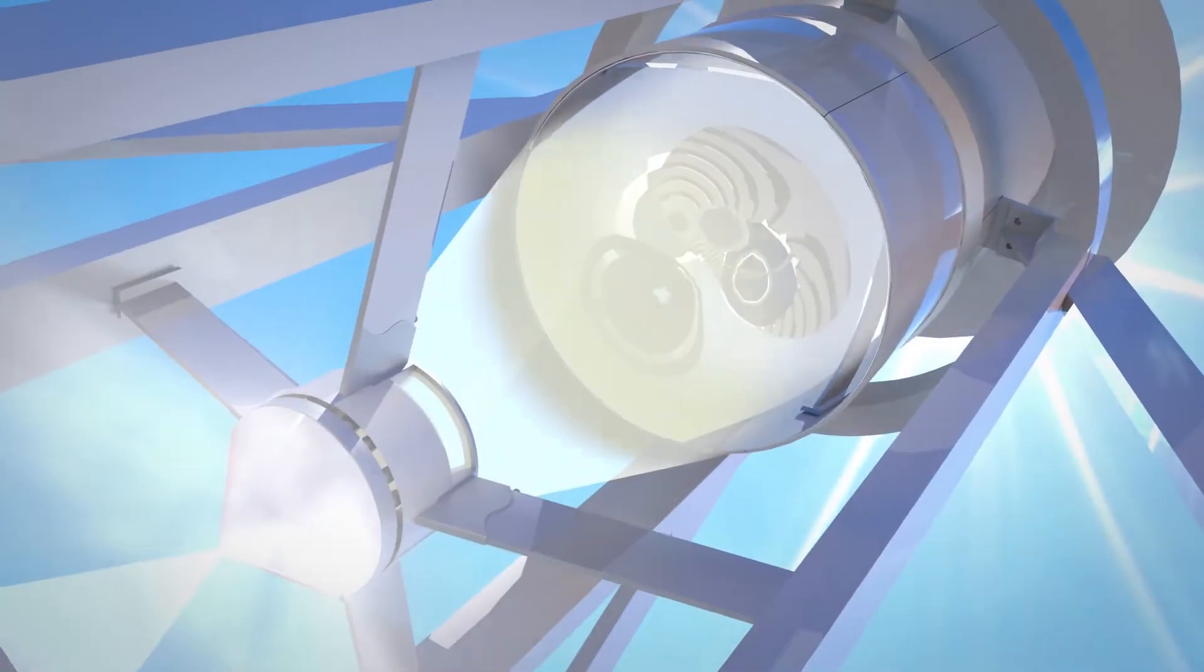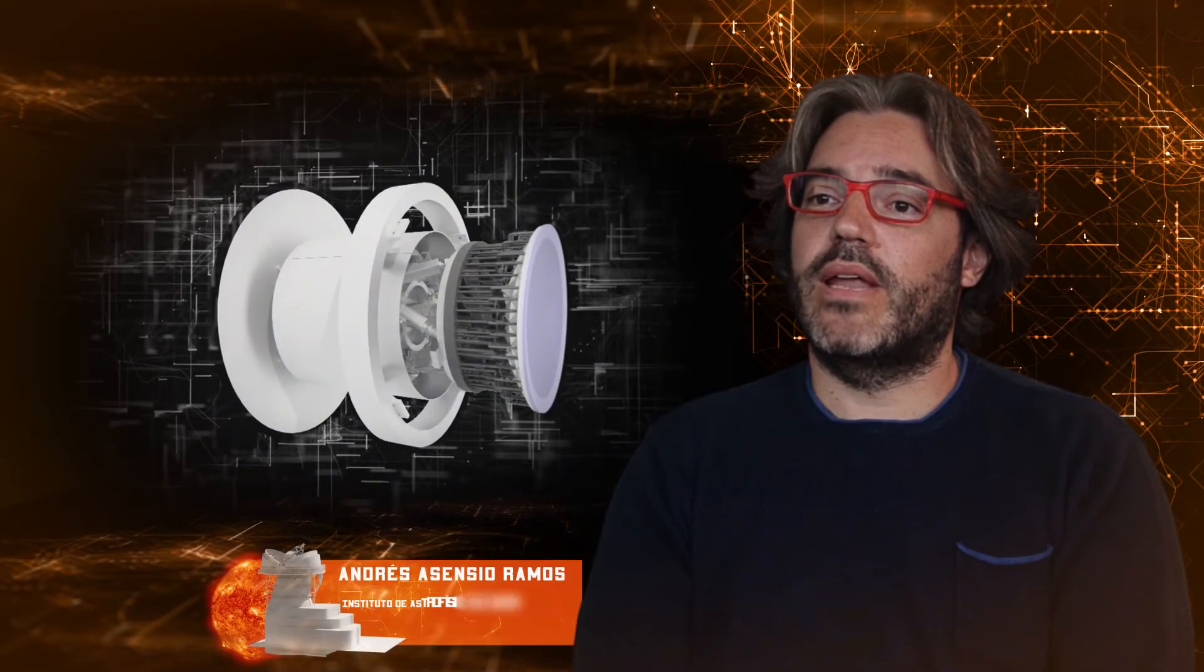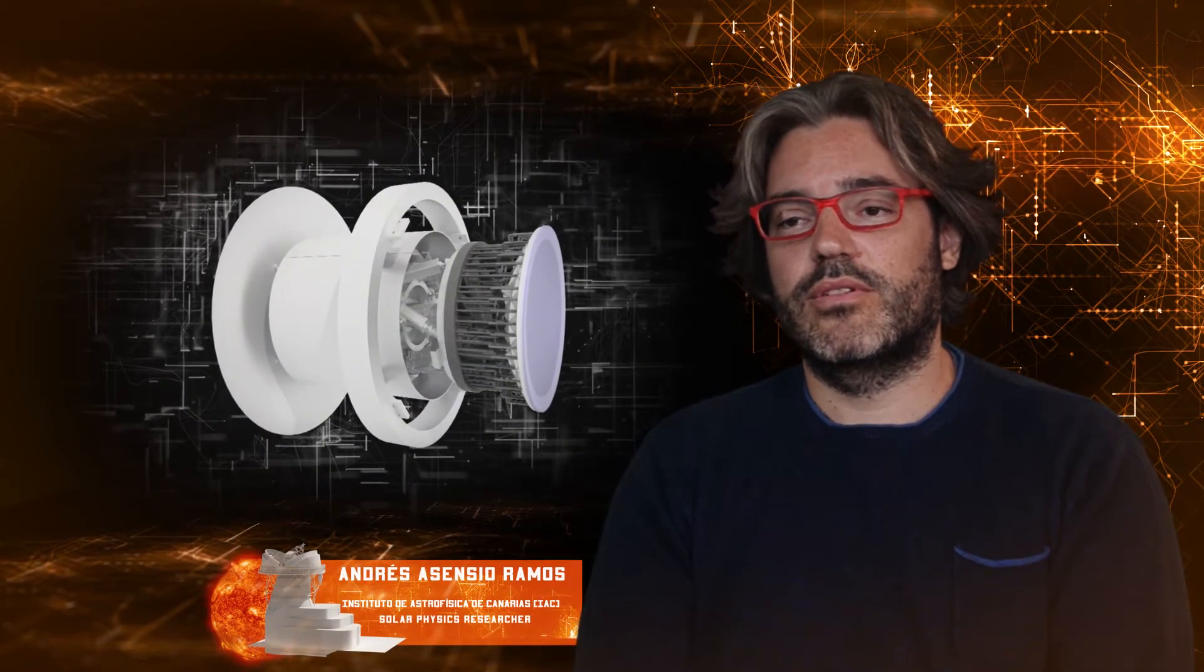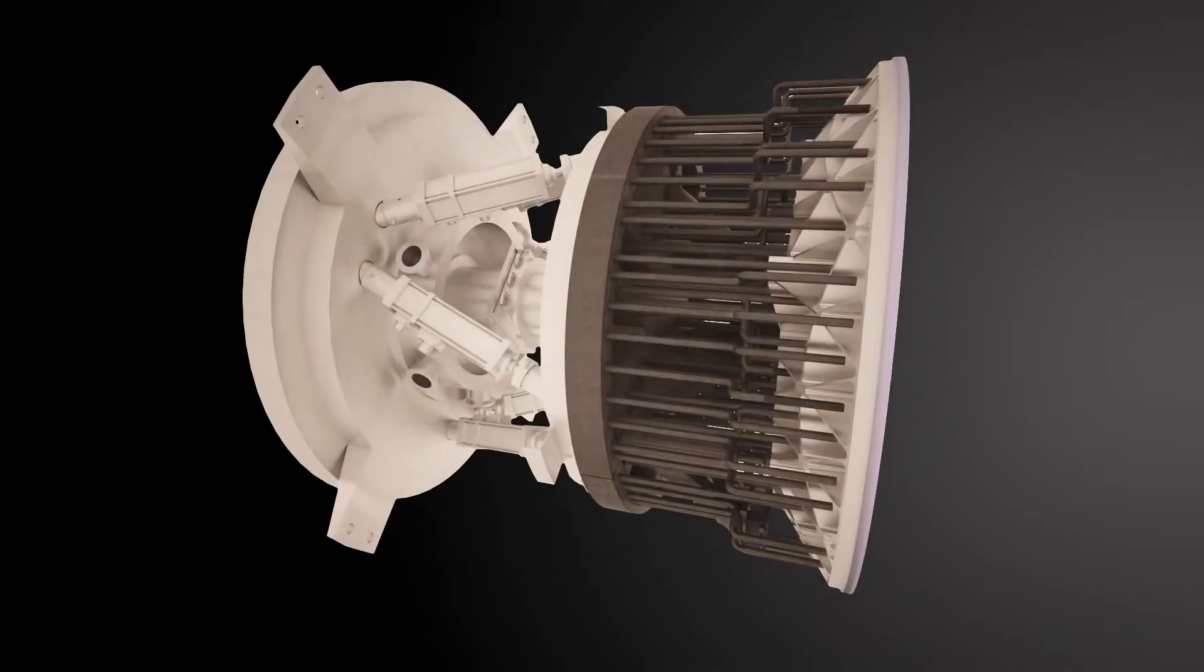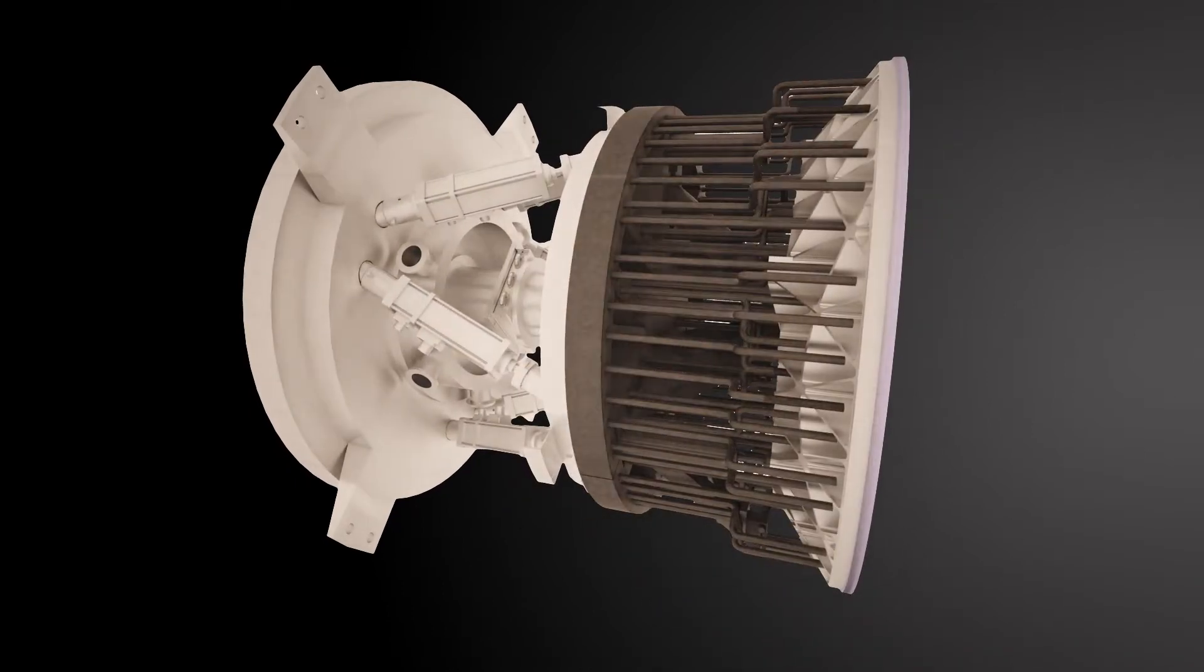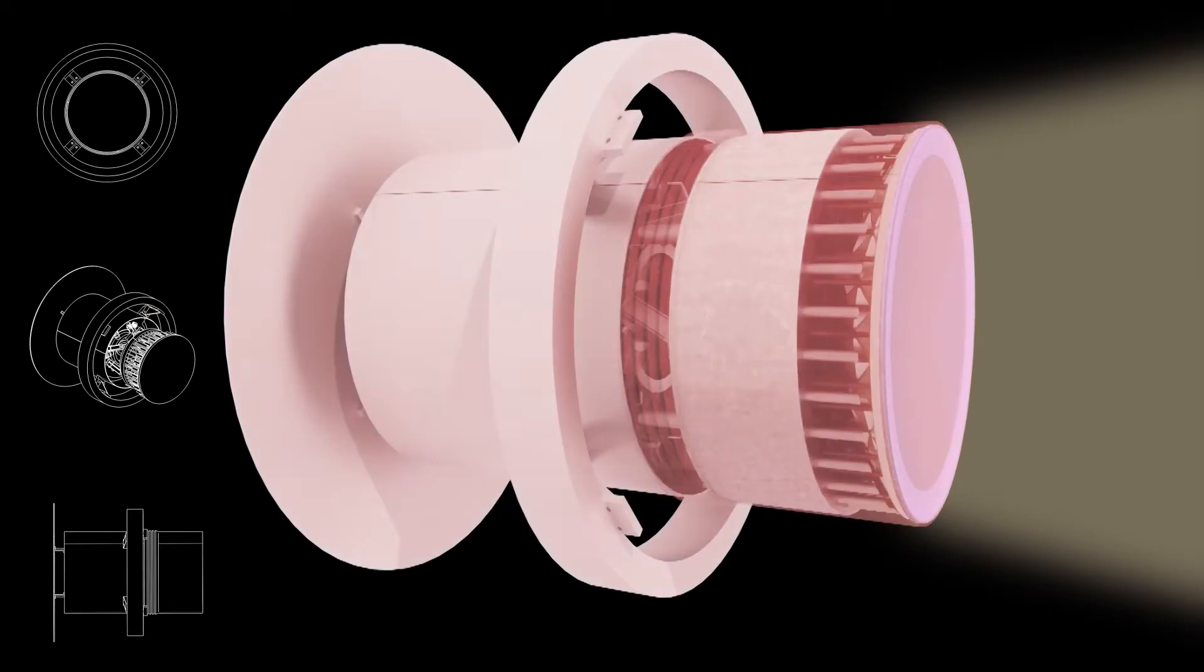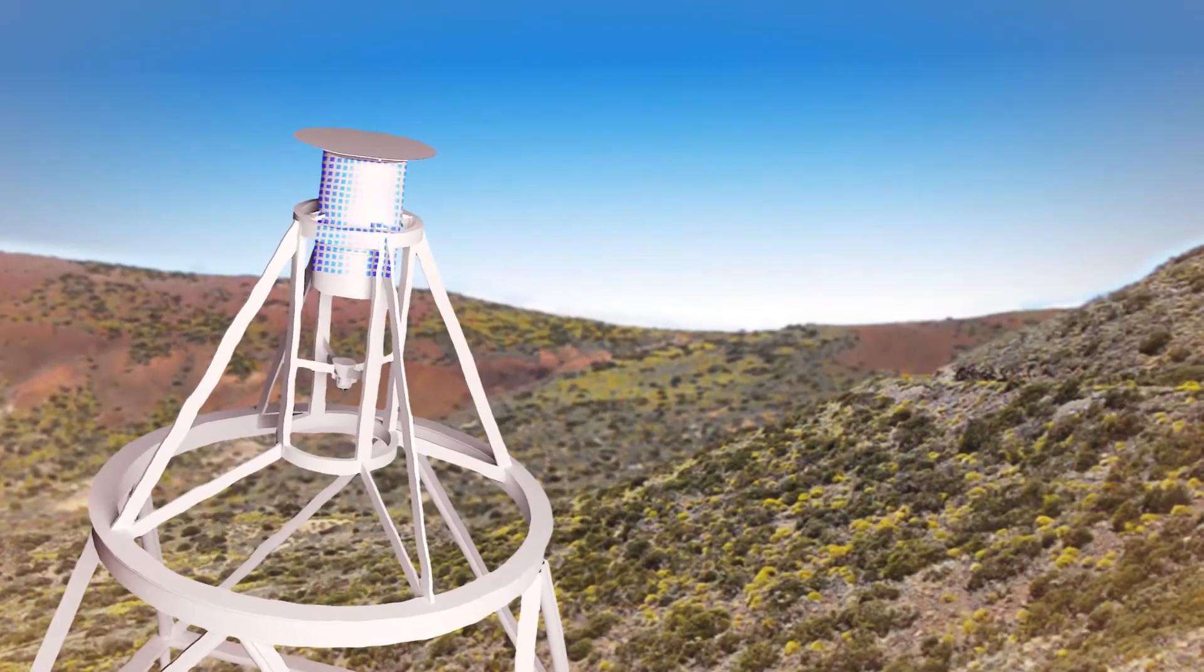The secondary mirror is responsible for collecting the light reflected by the primary. It will be placed on a mobile structure or hexapod that will allow to make second corrections on the solar image, rectifying the optical aberrations and guaranteeing the maximum optical quality of the telescope. It will also have a cooling system to avoid local turbulence that could affect the quality of the image.